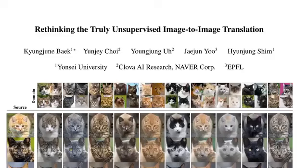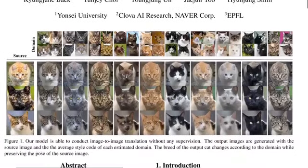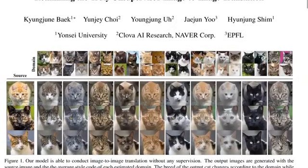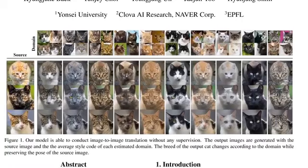Hi there. Today we'll look at 'Rethinking the Truly Unsupervised Image-to-Image Translation' by Kyung Joon-ae Baik, Yoon Jae Choi, Jung Joon Woo, Ja Joon Yoo, and Hyun Joon Chim. In this paper they deal with image-to-image translation in an unsupervised fashion. On a high level, they replace the need for domain or single image label annotations by training a guiding network that does self-clustering of the image domain, which guides the image-to-image translation instead of the previously needed labels.